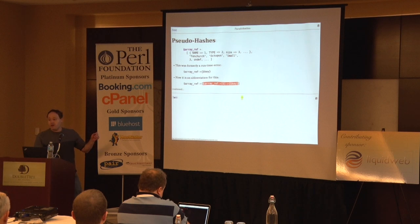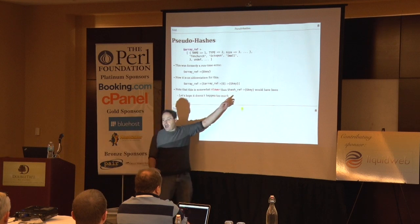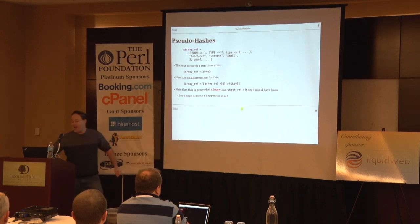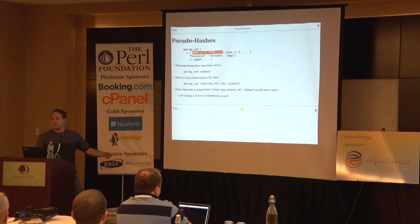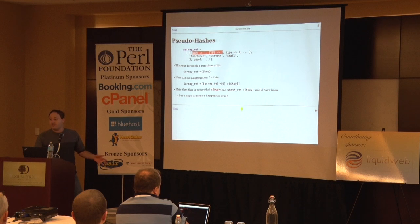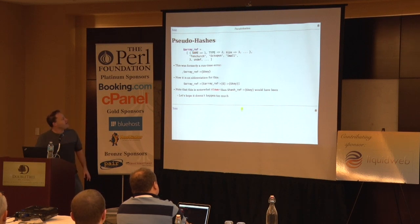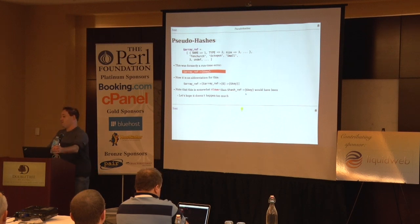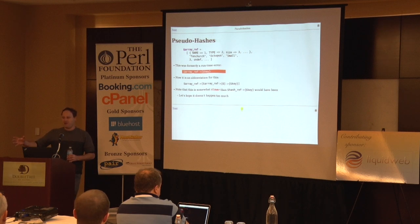It's worth pointing out that when Perl has to do this runtime path, it's actually slower than just using a hash ref would have been — because the hash lookup is exactly the same, and on top of that you've got two array lookups. But typically when you're accessing an object, the key is a hard-coded compile-time string, and the hope was that in those cases you get enough of a win to offset the loss in the dynamic case.